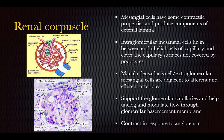Interglomerular mesangial cells lie between endothelial cells of the capillary and cover surfaces not occupied by podocytes. The macula densa or lacis cells are extraglomerular cells that lie outside the glomerulus, adjacent to the afferent and efferent arterioles. They support glomerular capillaries and help unclog and modulate flow through the glomerular basement membrane. They respond to angiotensin: angiotensin 2, converted in the lungs, binds to their receptors causing constriction to raise blood pressure.